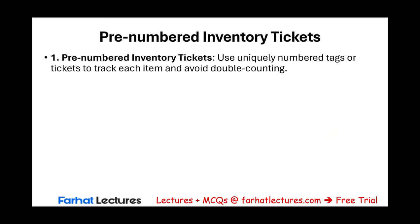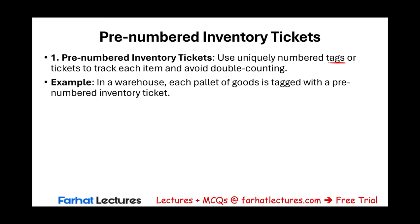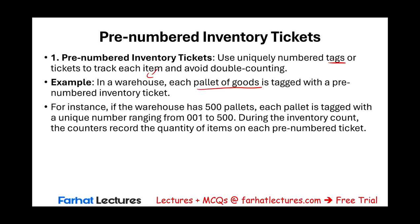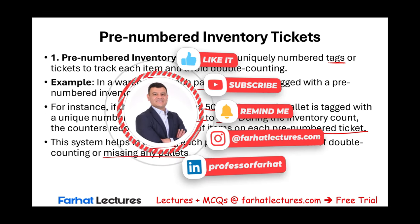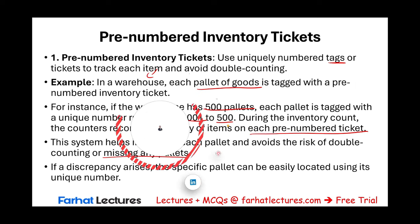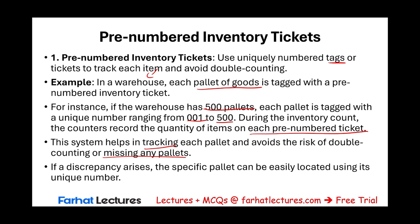Pre-numbered tickets: use uniquely numbered tags to track each item and avoid double counting. For example, if a warehouse has 500 pallets, each pallet is tagged with a unique number ranging from 1 to 500. During the inventory count, counters record the quantity of items on each pre-numbered ticket. This system helps track each pallet and avoids double counting or missing any pallets. If a discrepancy arises, the specific pallet can be easily located using its unique number.